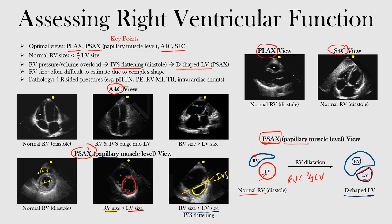This D-shaped left ventricle is a result of the intraventricular septum flattening as a consequence of increased right ventricular pressure or volume overload making it so big and pushing it over. The parasternal short axis view is a great one to look at for this.